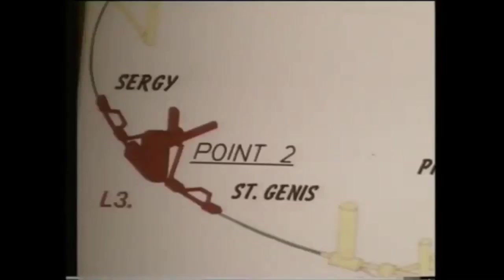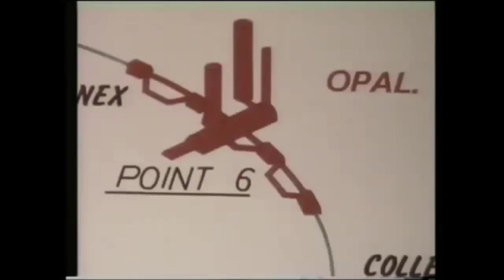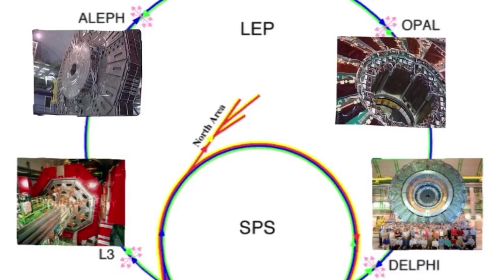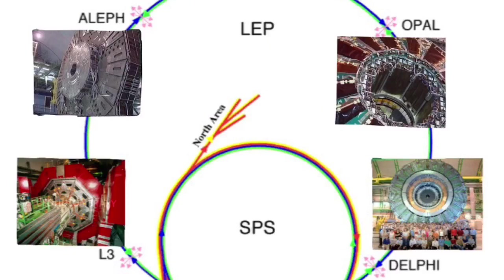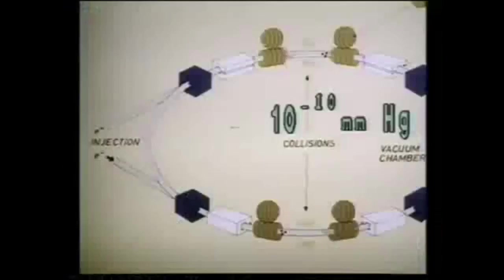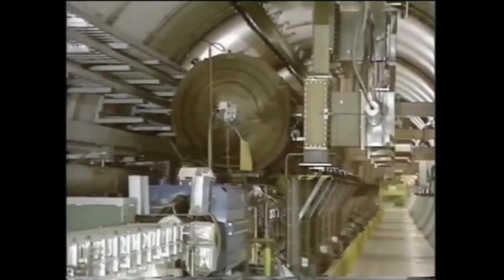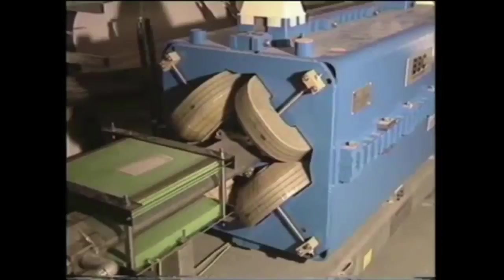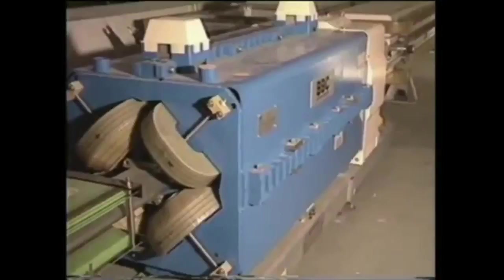The orbit is made up of alternate arcs and straight sections — eight arcs with a radius of curvature of 3.1 kilometers and eight straight sections of about 300 meters each. Four bunches of electrons travel anticlockwise and four bunches of positrons travel clockwise inside the high vacuum tube. Particles are accelerated by 128 radio frequency cavities. The circular orbit is maintained by 3,000 dipole magnets, each producing a magnetic field of 0.135 Tesla. The beams are focused by 760 quadrupoles and 520 sextupoles. The eight bunches collide every 22.4 microseconds, and billions of particles are present in each bunch.